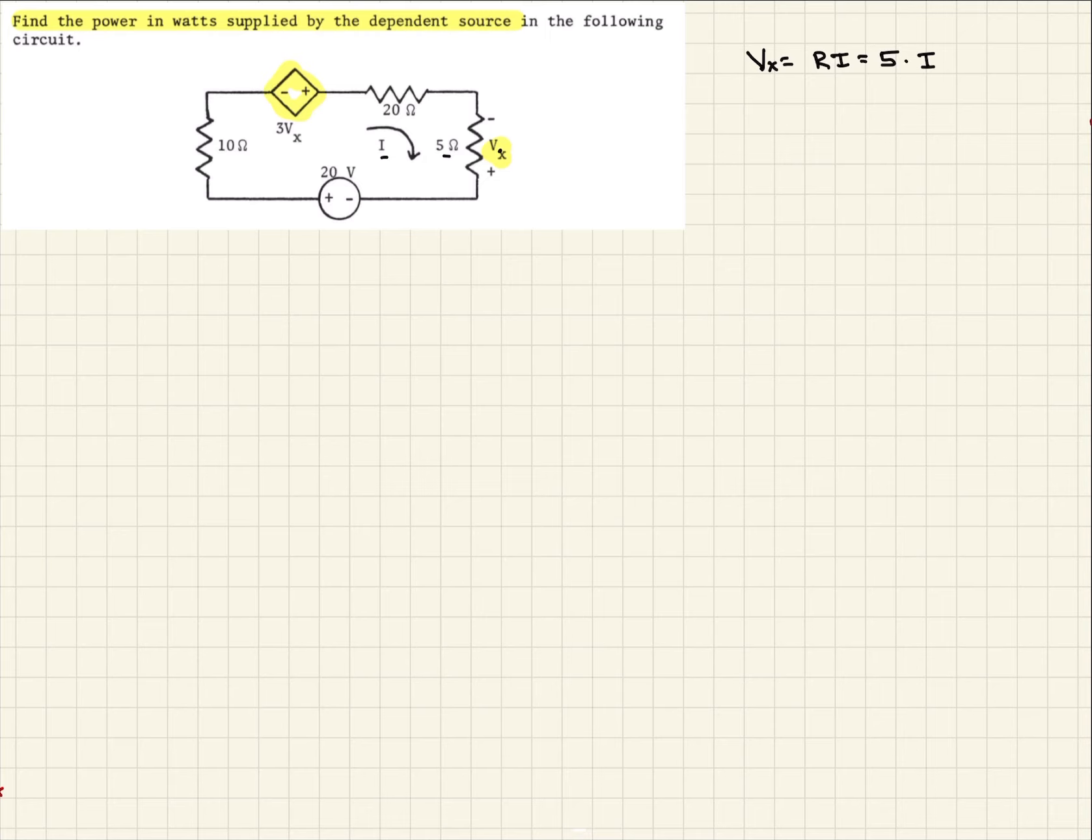So there's an expression for our control voltage. So now we know there must be a voltage drop across our dependent source, 3 times that. So it'll be 3 times Vx, right, and it'll be a minus since it's a drop, and so that will be 15. Well, let's write it out. It'll be 3 times 5I, which will be 15I.